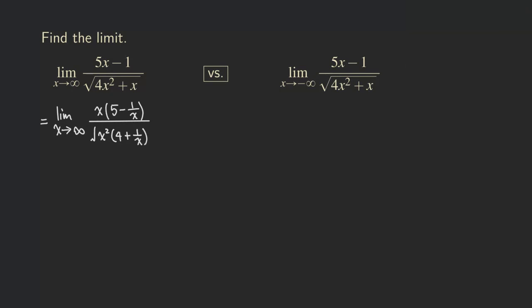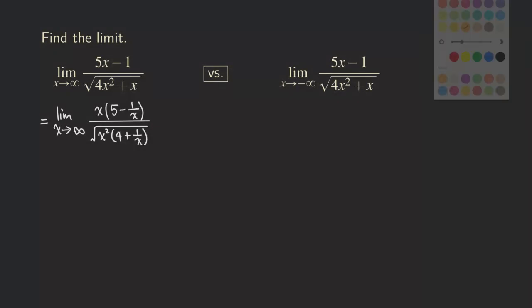So the next step is to take this x squared — because now it's a product, x squared times this thing — and take the x squared outside the square root. Let's recall something that's really important here.